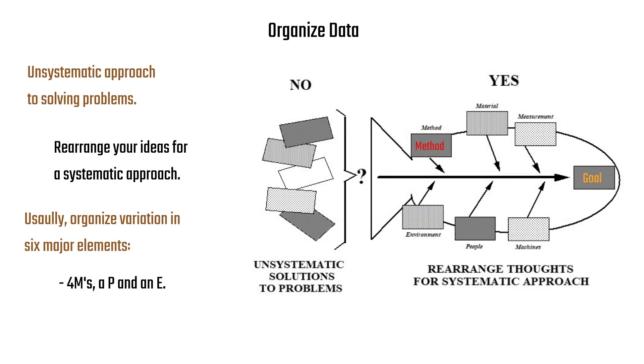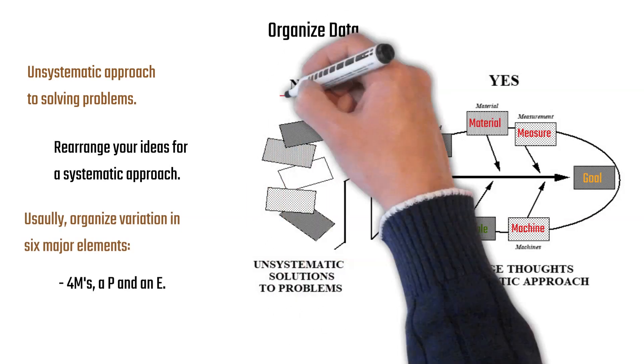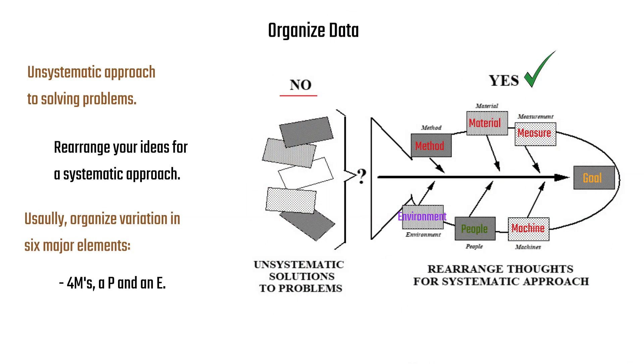Usually use four M's, P, and an E - the methods, materials, measurements, machines, people, and environment. They don't have to be organized in those six major elements, but that's what we use and call them the four M's, P, and an E.